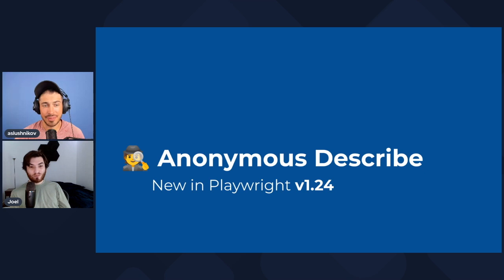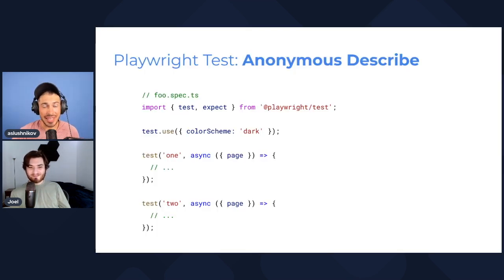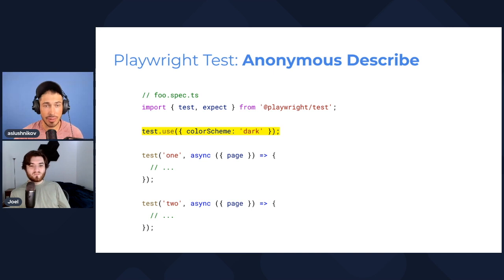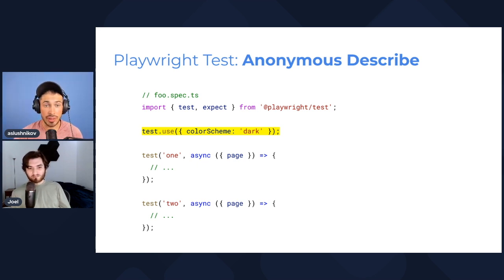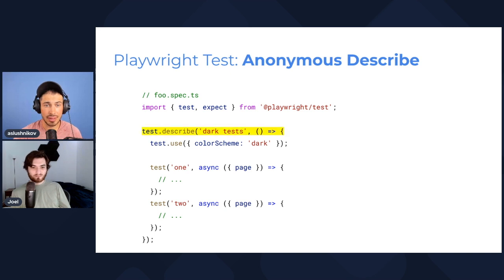Next up: anonymous describe. Say you have this test file — foo.spec.ts — and you can use the test.use command to specify options file-wide, so all tests inside this file will have a certain color scheme. Alternatively, you can group your tests in a test suite and specify test.use inside the suite, so all tests inside the suite will have that option.